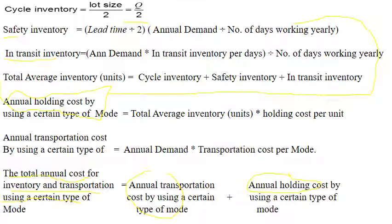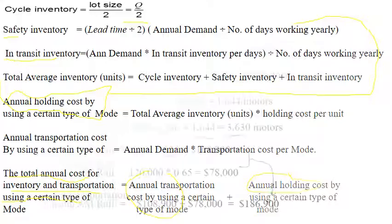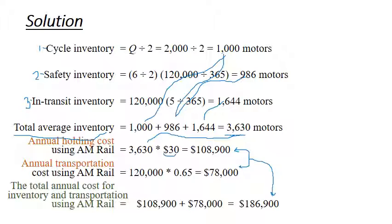The total average inventory is the sum of cycle inventory, safety inventory, and in-transit inventory. The annual holding cost equals total average inventory multiplied by the holding cost per unit. The annual transportation cost equals annual demand multiplied by the transportation cost per unit.